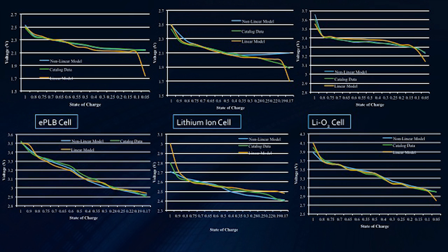And how did it all work out? Let's take a look at the data. The orange line you see above is the old model — the linear model that's used in more than 10 million cars worldwide. The green line is the line we're trying to match: the actual battery characteristics. And the light blue line is the model that we created, the nonlinear equivalent circuit model. Not bad, right?